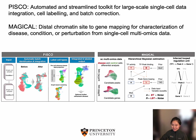Towards this end, we describe two complementary methods: PISCO and MAGICAL. PISCO is a fully automated framework that performs single-cell integration and cell-type identification. It can detect batches within the given samples and remove batch effects by integrating samples robustly. PISCO can also be expanded beyond integrating single-cell RNA-seq samples and can be used for multimodal data integration. PISCO uses a reference-based method for supervised cell-type identification.